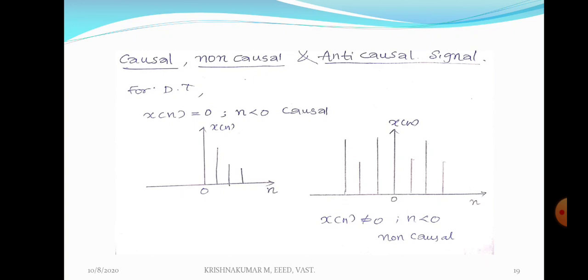For non-causal: x(n) not equal to 0 when n less than 0 — even if the value of n is negative, the signal exists in that part. Therefore, that signal is known as non-causal signal. For continuous time: x(t) not equal to 0 when t less than 0 — it will be a non-causal signal.